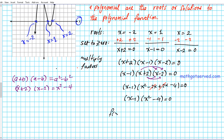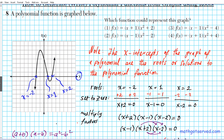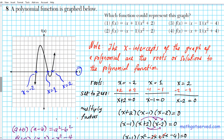The function is f(x) = (x - 1)(x² - 4). The answer to problem 8 is option number 3. This is the function that, when graphed, would generate the result shown.